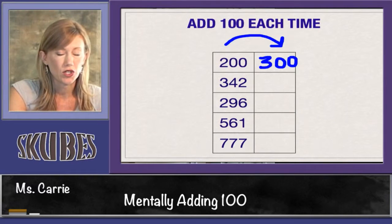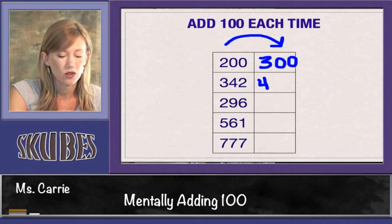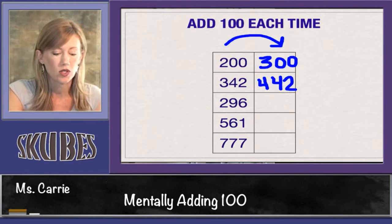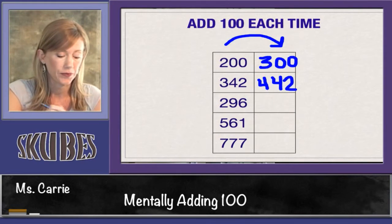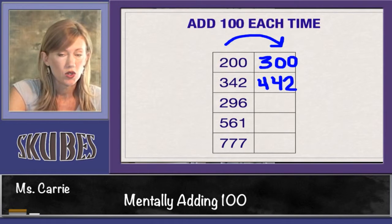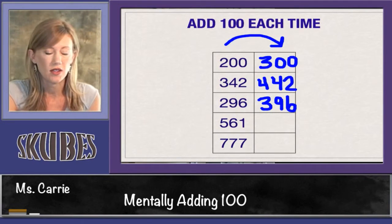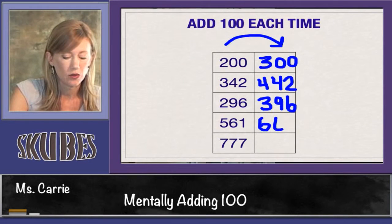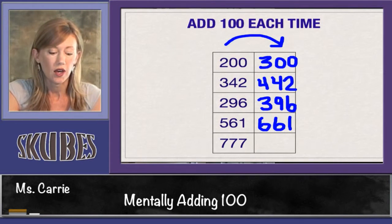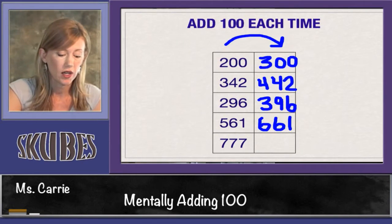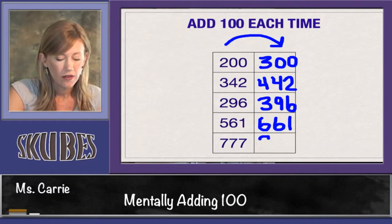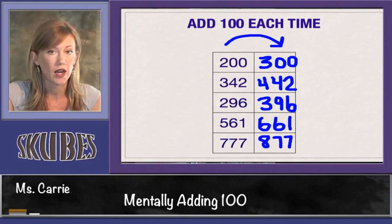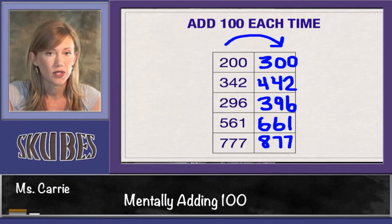If we go from 342 and add 100, we get 442 since the hundreds place goes up one and the other digits stay the same. 296 would be 396. The two goes up to a three and the nine and the six stay the same. 561 turns into 661 because the hundreds digit needs to go up one. 777, if we added 100, would be 877. The seven turns to an eight because we added 100 in the hundreds place and the two sevens stay the same.